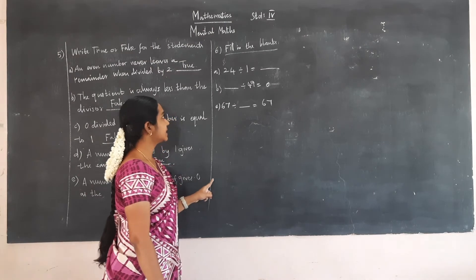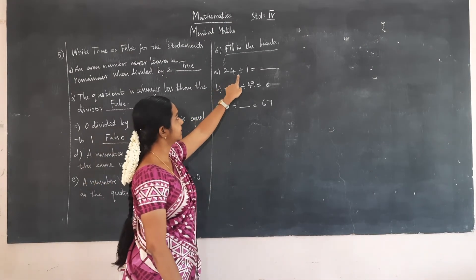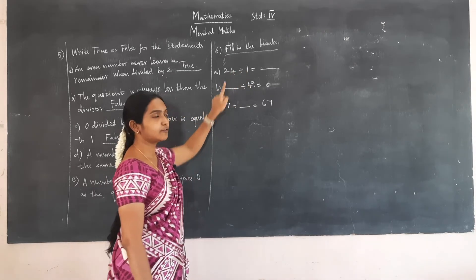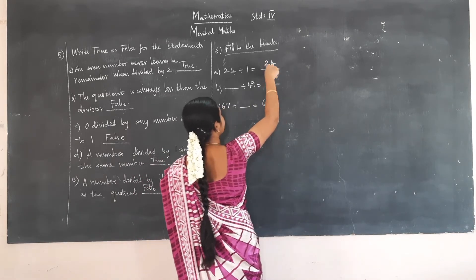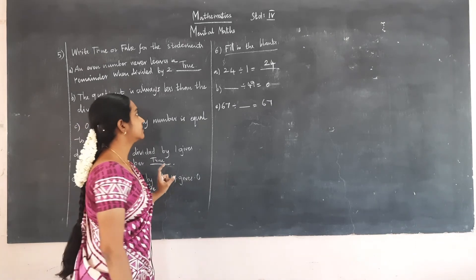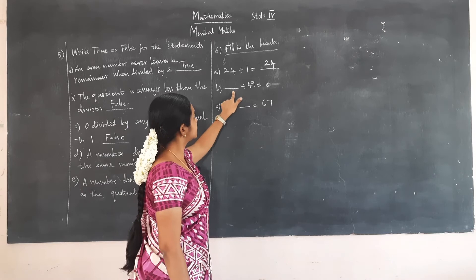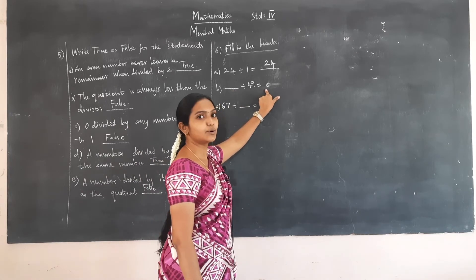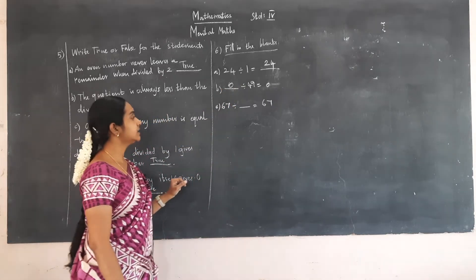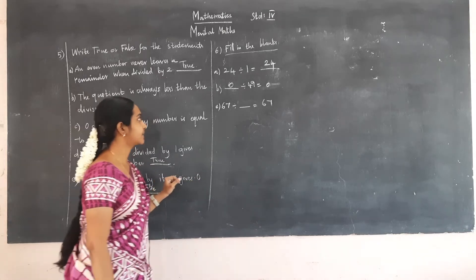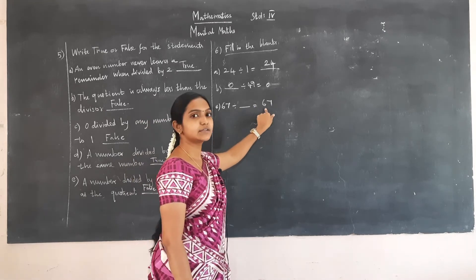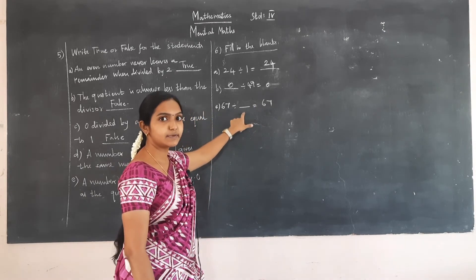Now we are going to fill the blanks. 24 divided by 1: when we divide any number by 1, we get the same number, so the answer is 24. Next, a number is divided by 49 and the answer is 0, so the number divided must be 0, because when we divide 0 by any number we get 0. Finally, 67 divided by a number gives 67, so it must be divided by 1.